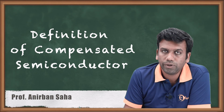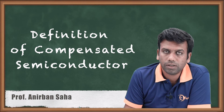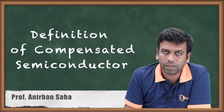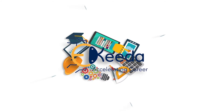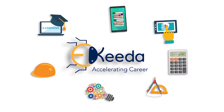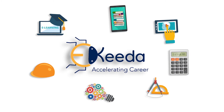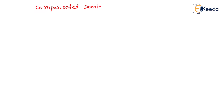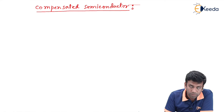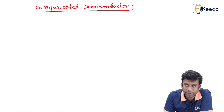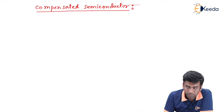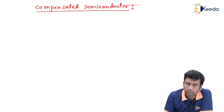Hello friends, in this video we are going to discuss the definition of compensated semiconductor. So, the definition of compensated semiconductor is that in this type of semiconductor both the acceptor and the donor ions are present.